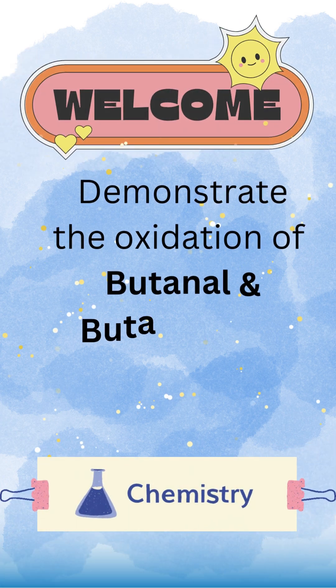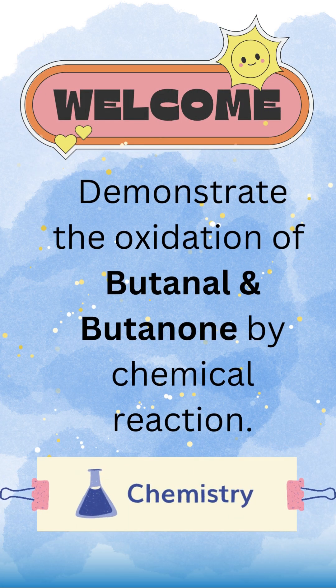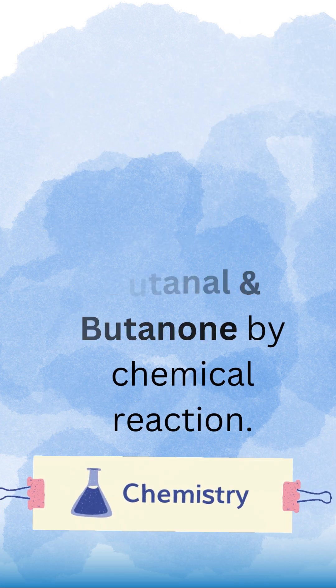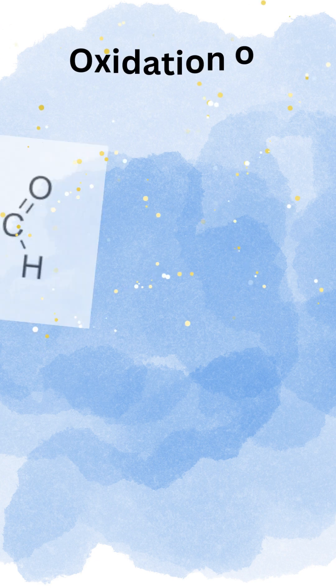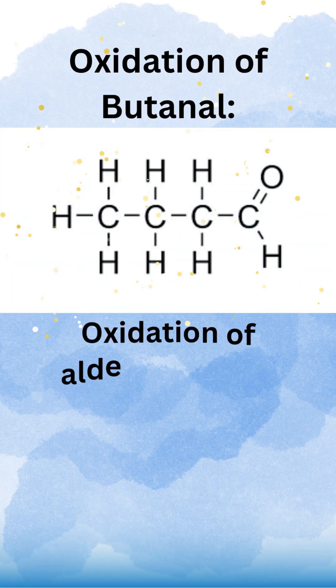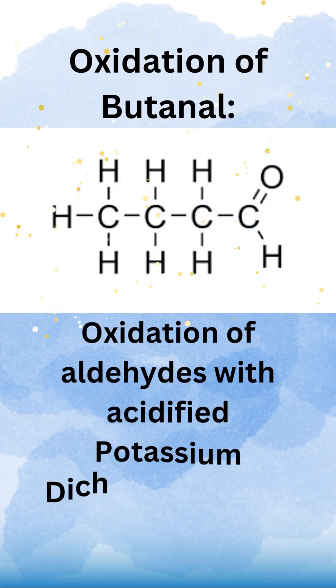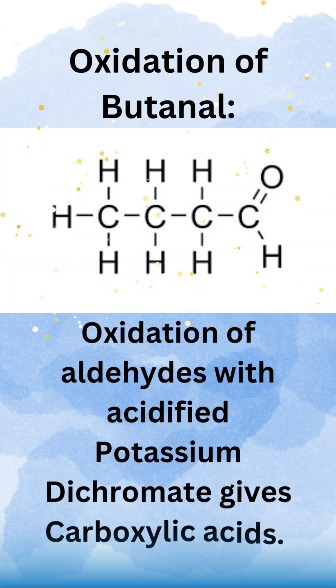Demonstrate the oxidation of butanol and butanone by chemical reaction. Oxidation of butanol — oxidation of aldehydes with acidified potassium dichromate gives carboxylic acids.